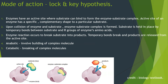In the lock and key hypothesis, the enzyme is considered the lock and the substrate the key. Enzymes have an active site that is specific and complementary to the shape of the substrate. Upon collision they bind to form an enzyme-substrate complex, held together by temporary bonds between the substrate and R groups of the amino acids. The reaction occurs and the products are released. Enzymes can catalyze catabolic reactions — breaking complex molecules — and anabolic reactions — building complex molecules from smaller ones.